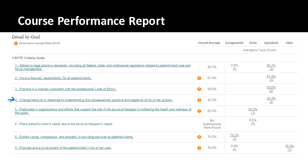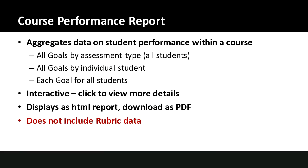This is all via the Course Performance Report within your course. It aggregates data across those three sections. By default it displays as an HTML report in your browser. You can download it as a PDF — it loses some interactive ability at that point, but if you have a view you like and want to send it to someone else, that's a little bit easier. One note: rubric data does not work very well within the Course Performance Report. Unfortunately Blackboard isn't aggregating that into this report.